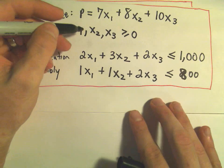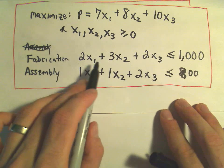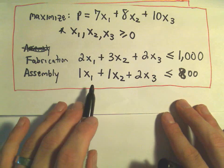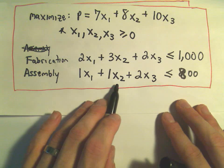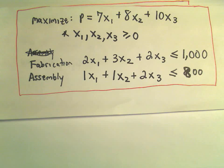And it's going to be subject to these constraints: x1, x2, x3 all have to be greater than or equal to 0, and likewise 2x1 plus 3x2 plus 2x3 has to be less than or equal to 1000, 1x1 plus 1x2 plus 2x3 has to be less than or equal to 800.